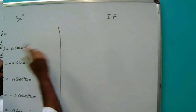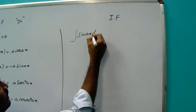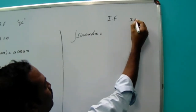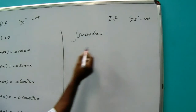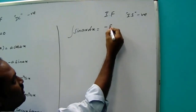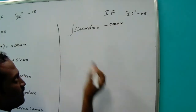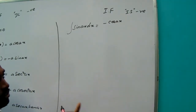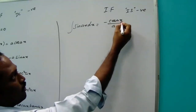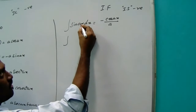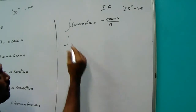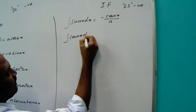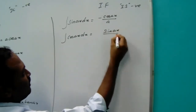For trigonometric integration, integrations are divided by the coefficient of x. The integral of sin(ax) dx equals minus cos(ax) divided by a. The integral of cos(ax) dx equals sin(ax) divided by a.